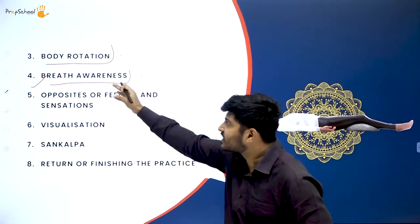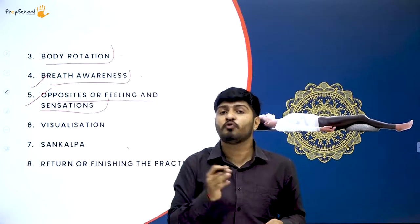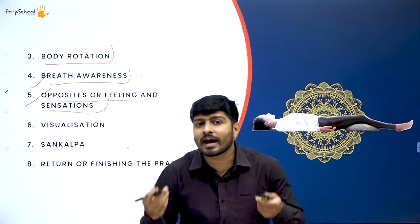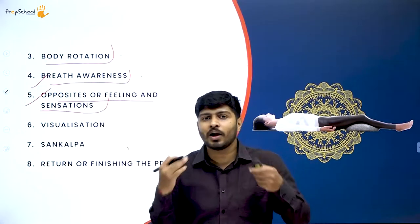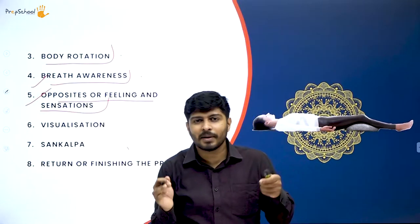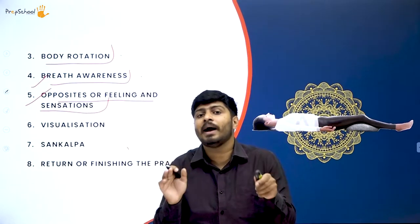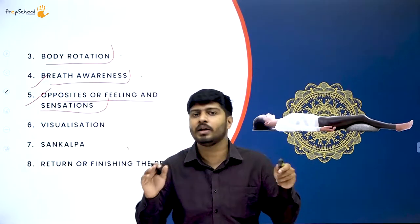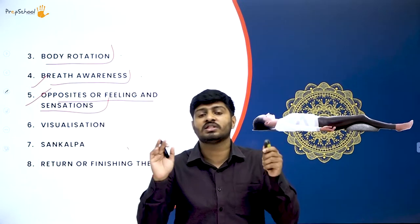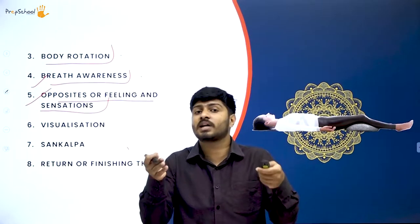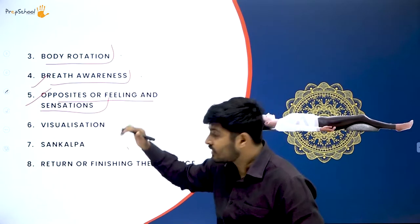The fifth stage is opposites of feelings and sensations. Think about one feeling — for example, happiness — then think about its opposite, sadness. Then think of another feeling and its opposite. What we are doing is psychologically tricking our mind, putting it at ease and making it believe there is nothing to worry about. Whatever is happening in your life is temporary. We are trying to make the subconscious believe there is nothing to worry about, and automatically you will start getting proper sleep.